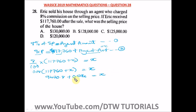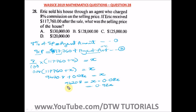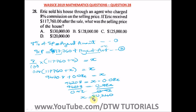We take 0.08x to the other side: 9,420.8 equals x minus 0.08x, which gives us 0.92x. So 9,420.8 equals 0.92x. Dividing both sides by 0.92, x equals 10,240. So the agent amount is $10,240.